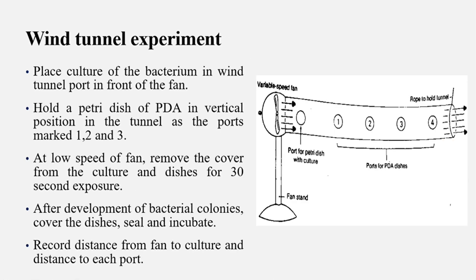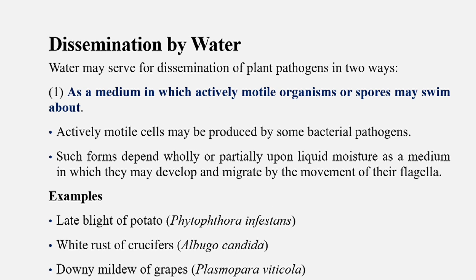Next is the wind tunnel experiment. We take a wind tunnel attached with fans, place a pure bacterial culture in front of the fan, and position four Petri dishes — labeled 1 to 4 — vertically at different distances. When the fan is on, we expose the dishes for 30 seconds, then cover, seal, and incubate them. We record which dishes show growth to determine the distance the culture is carried by the fan.